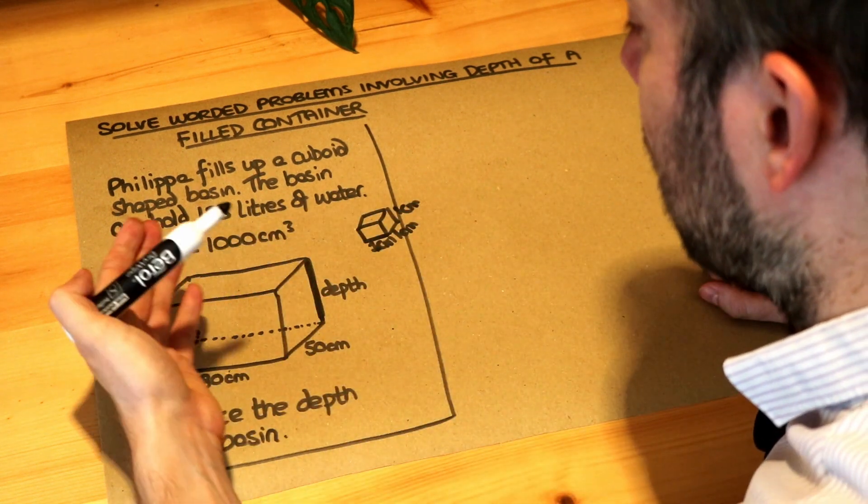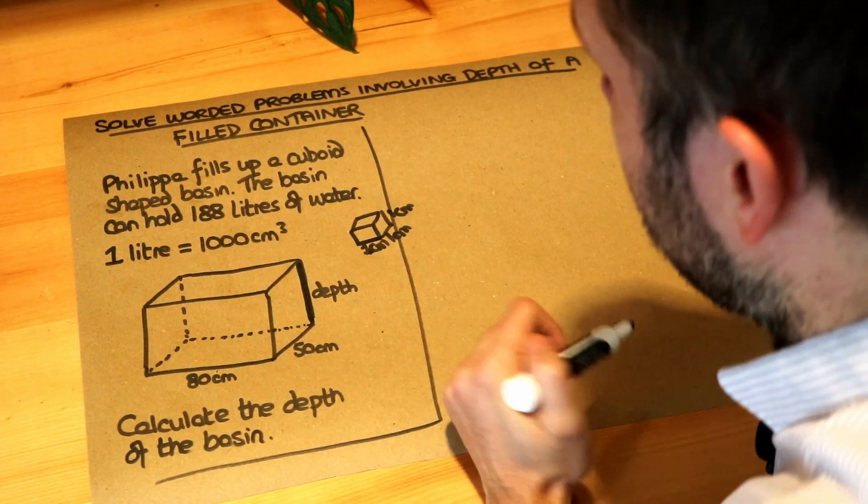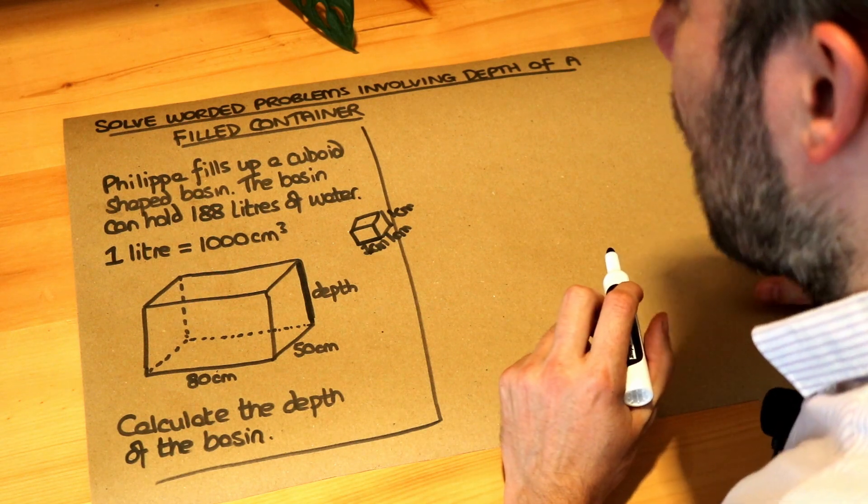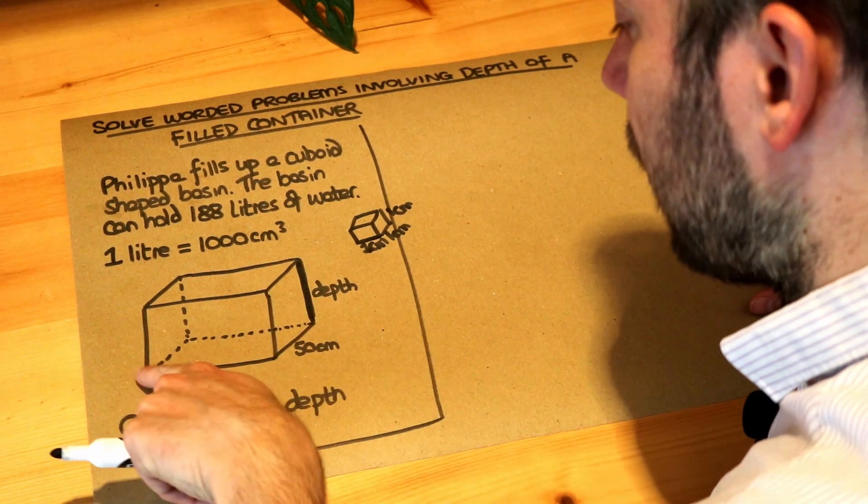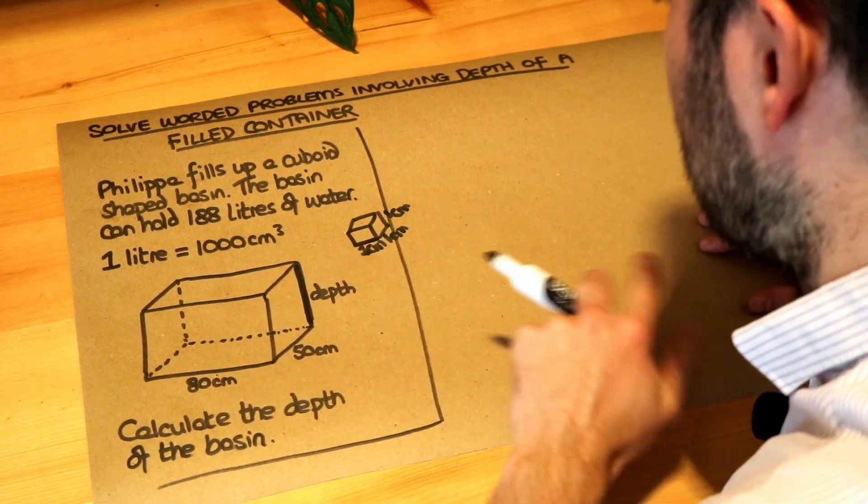Remember the volume is how much space you can fill inside that basin. And remember how we find the volume of a cuboid. We can just do the length times the width times the depth.